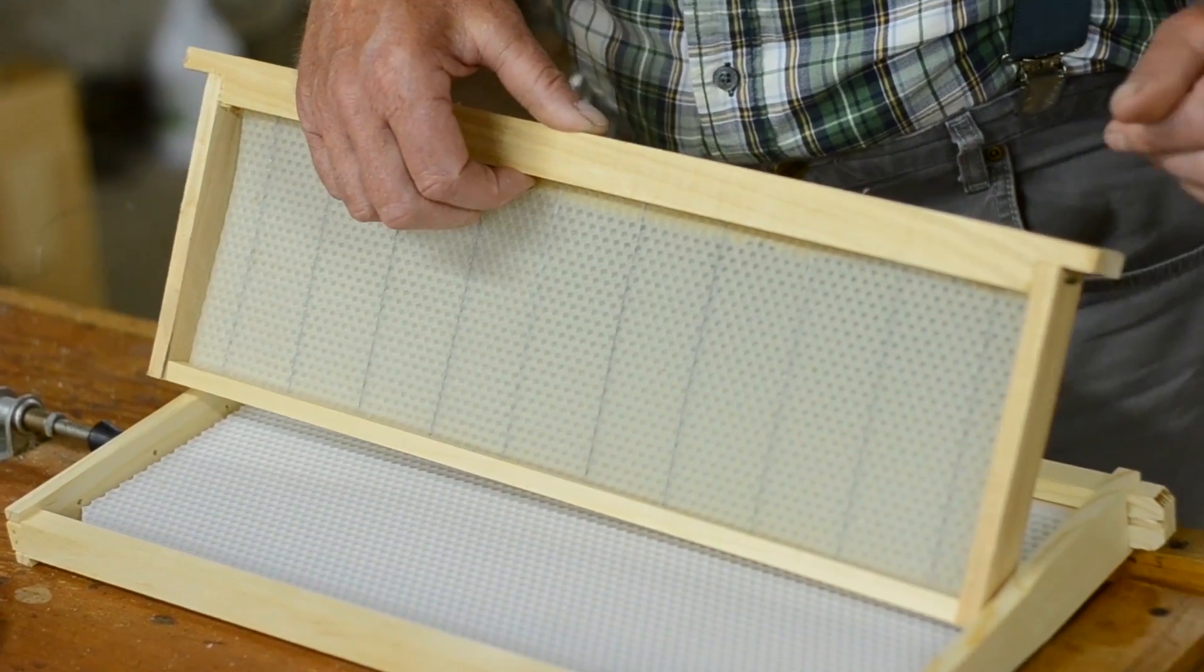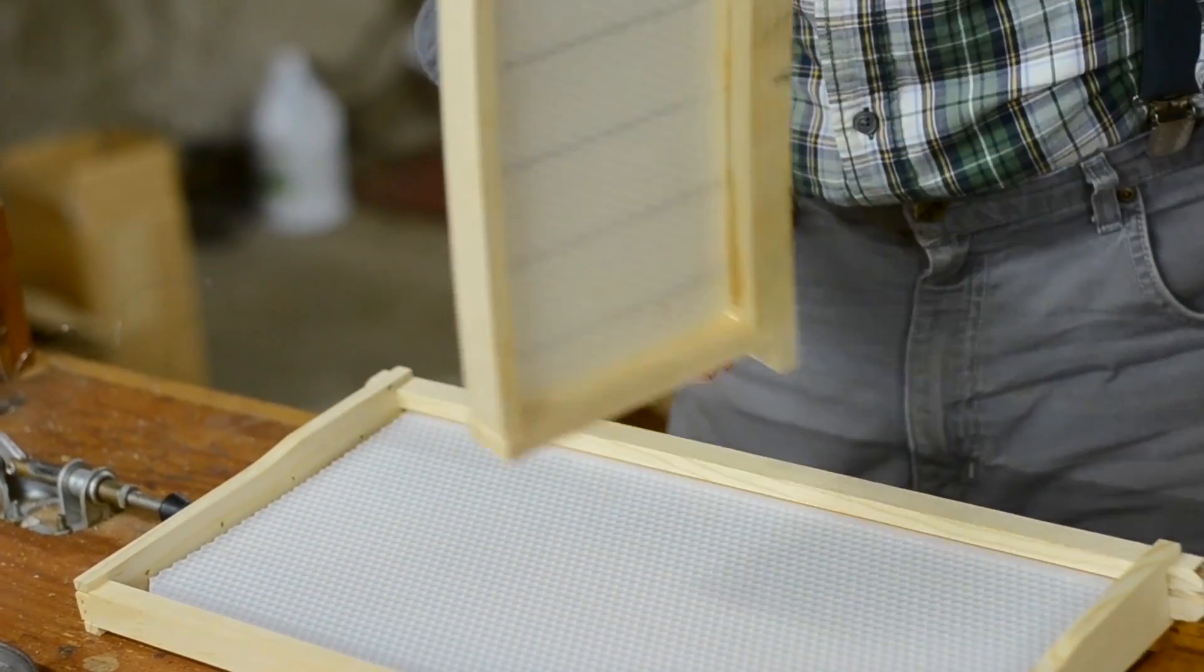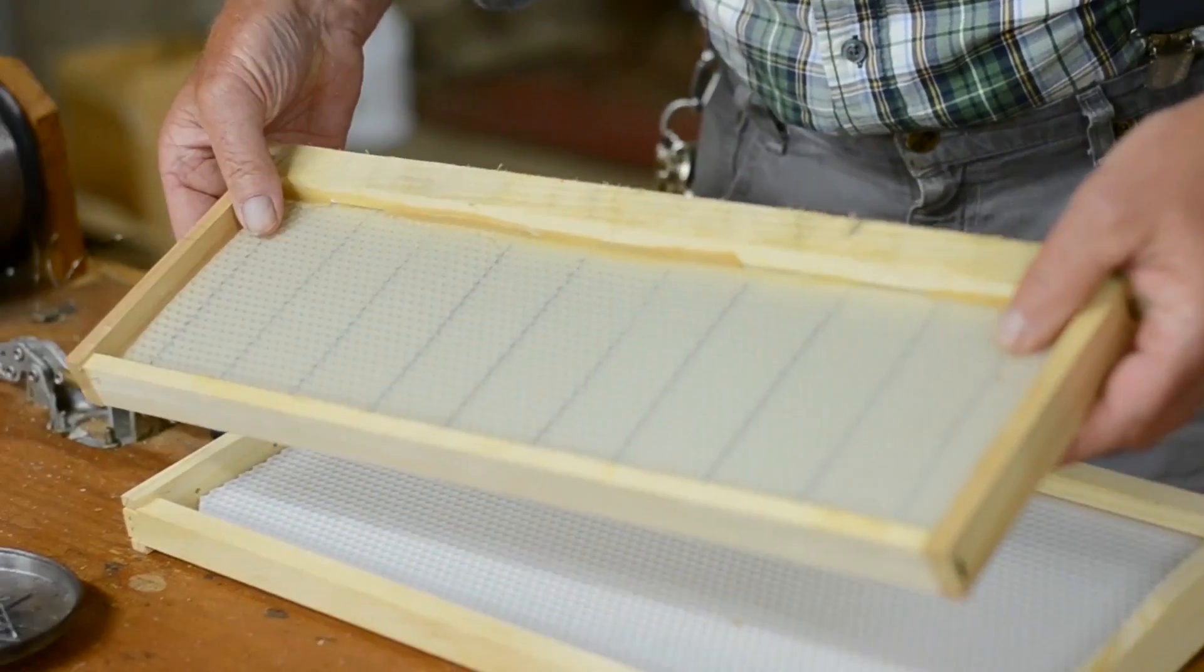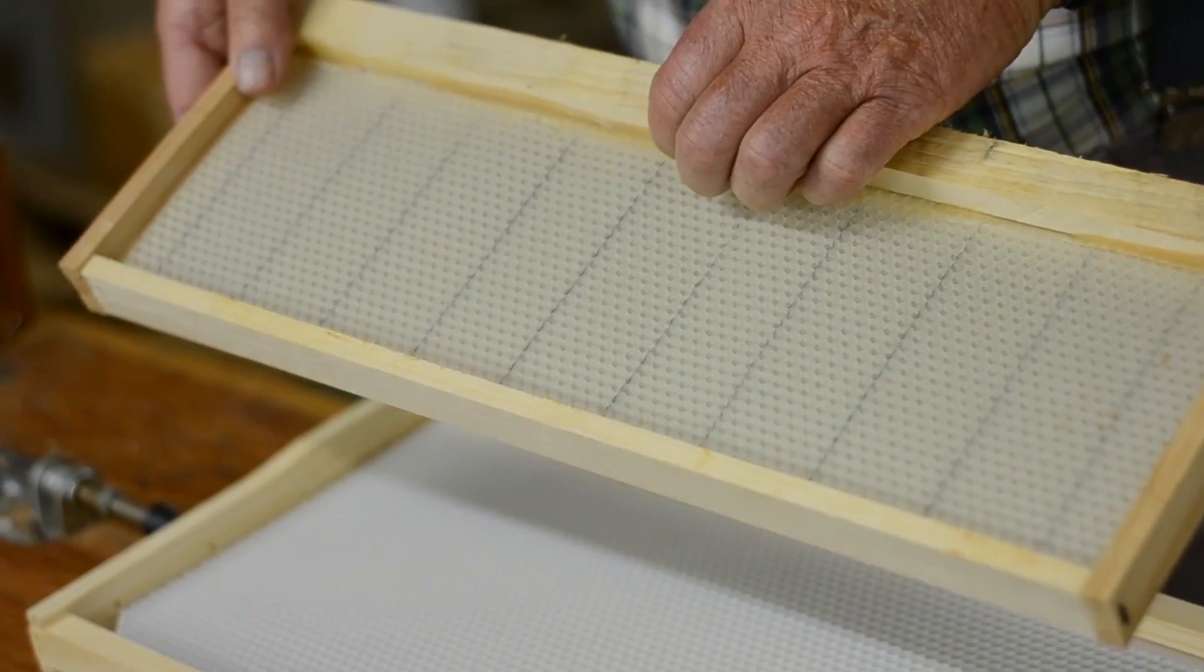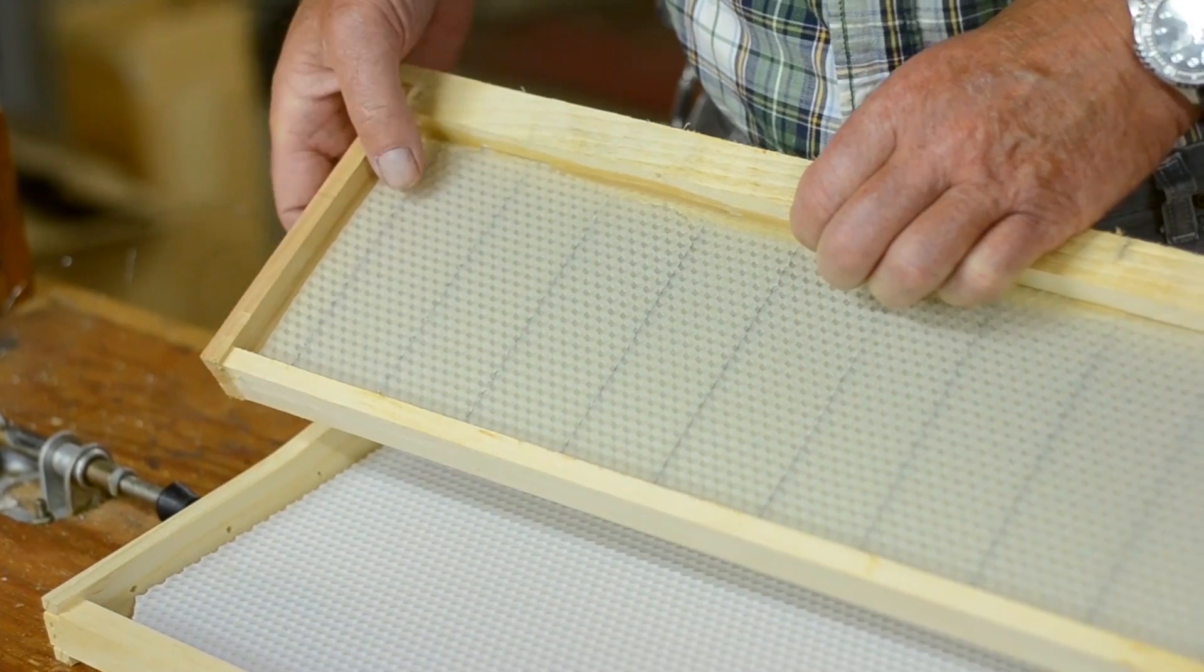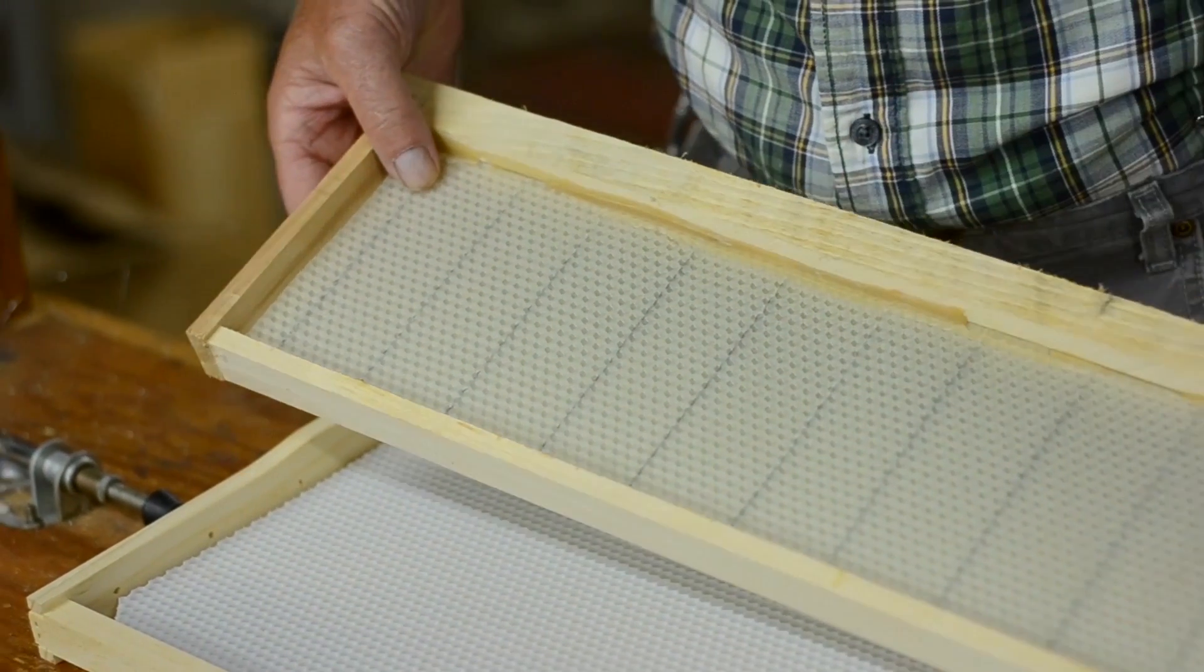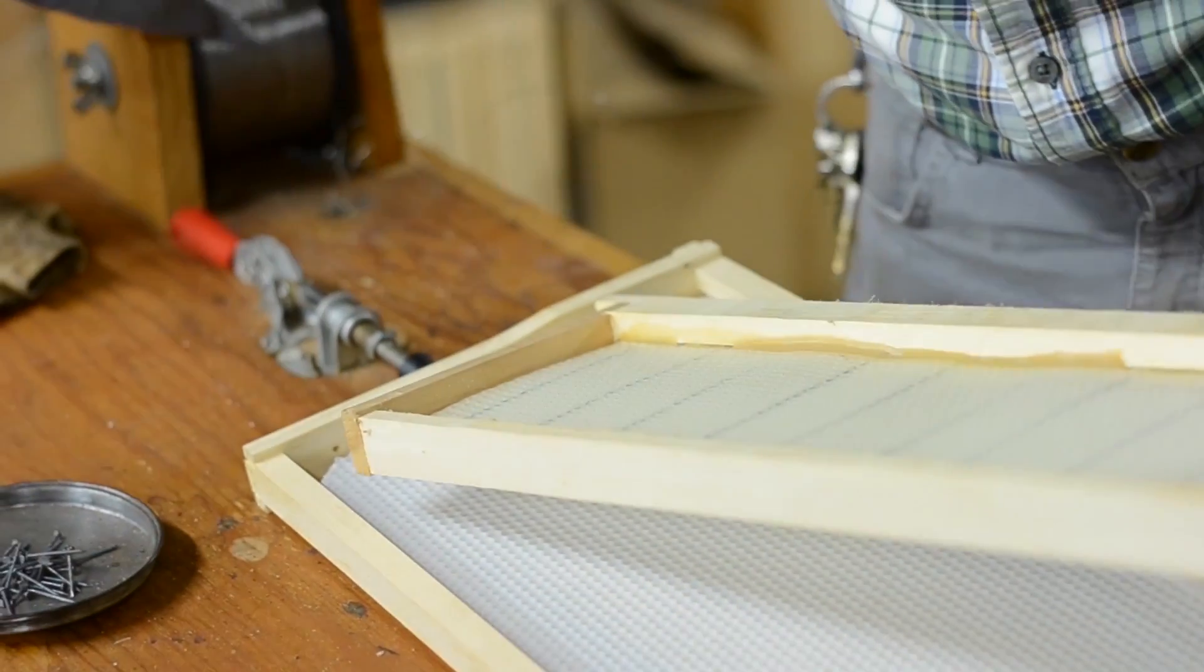But then we need to fix that wax in place at the top of the frame. And what we do is we pull the foundation up a little bit into the top bar which leaves some expansion space down in that bottom groove.